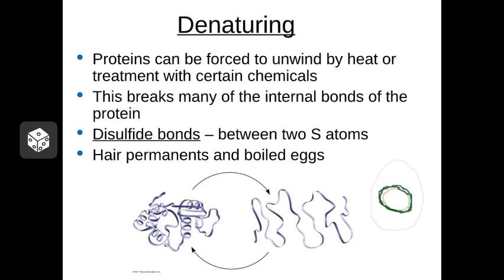Because there's a shell on the egg, that sulfur gets kind of trapped around the yolk. It doesn't hurt you to eat that at all — it just looks kind of weird. Another place you might find denaturing is with hair permanents. If you've ever permed your hair and noticed that it smells like sulfur, that's because you're actually breaking down the proteins in your hair and reforming them into a different shape. Sulfur is released from your hair as a product of that.